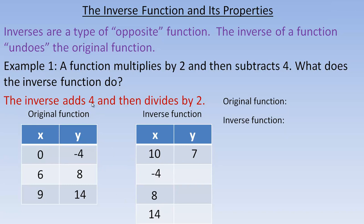If we take negative 4 and add 4, that's 0, divided by 2 is 0. So the inverse takes negative 4 and returns it to 0. For 8: add 4 gives 12, divide by 2 gives 6. And 14 plus 4 is 18, divided by 2 is 9. So the inverse changed 8 back to 6 and 14 back to 9 — this demonstrates that it is the inverse.